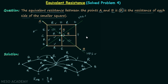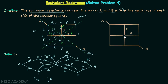According to rule number 2, whenever we have the vertical plane of symmetry, branches which are mirror images about the vertical plane of symmetry carry the same current. In our network, this branch is the mirror image of this branch, so if I1 is the current in one branch, the same current I1 flows in the mirror branch. Similarly, I2 is the current in another branch and its mirror image.